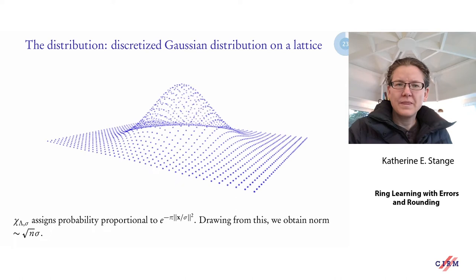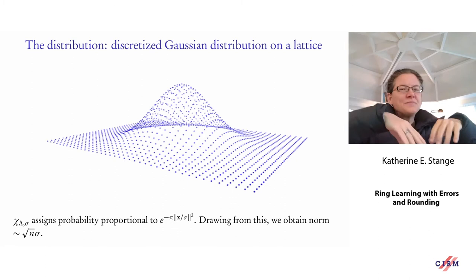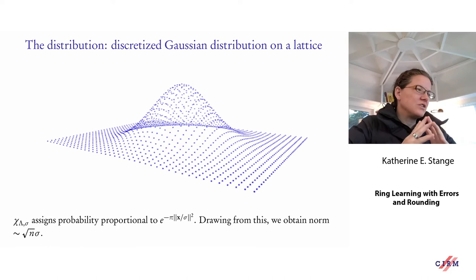For the error, people typically take a discretized Gaussian distribution on the lattice — you take a Gaussian in high dimension over your lattice and use it to determine probabilities of sampling any particular vector. Near the origin you have higher probability of sampling, so it's like a fuzzy ball around the origin. Short vectors in the lattice are what I use for my errors.